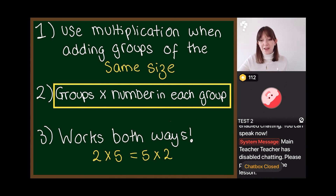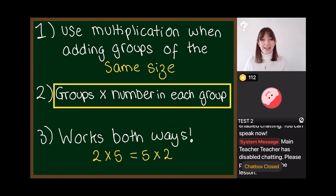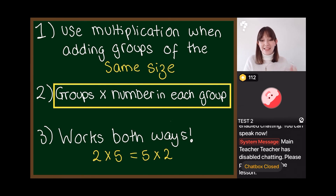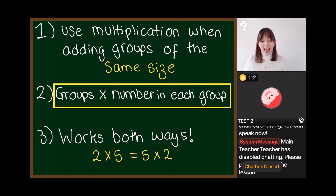All our groups have to be the same size — like with our apples, each tree had the same number of apples. And how we put together a multiplication sum: all we do is write the number of groups we have, times by the number in each group. This is our formula — this is the way we set up all of our sums.